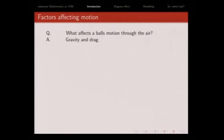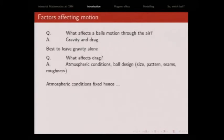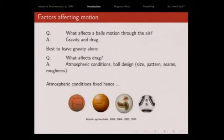What affects the ball's motion through air? Obviously, gravity and drag. I can't do anything with gravity. What affects the drag? The atmospheric conditions, the ball design, basically the roughness of the ball. In general, I can't fix the atmospheric conditions, and this is why you have all this work in ball design. So this is 1938, 1966, and so on, up to the recent Jabulani ball that was used in the last World Cup.